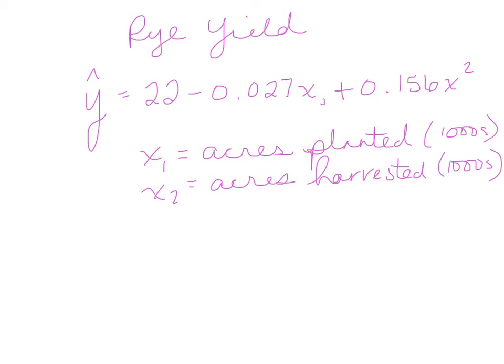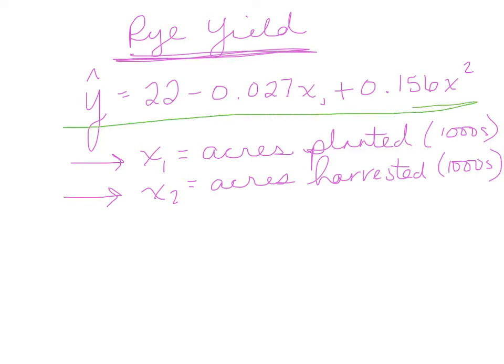Here's an agriculture example. If you want to predict the rye yield in bushels per acre, and you know the acres in thousands — how many acres were planted and how many acres were harvested — if you had those two measures, you can plug those values into an equation in order to predict what the rye yield will be in bushels per acre.